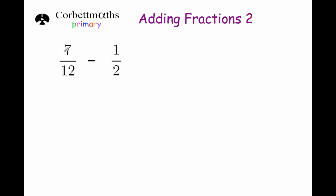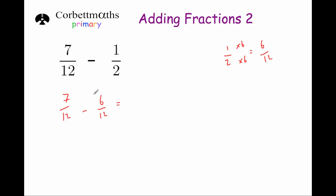Our next example is a subtraction: seven over twelve subtract one half. This is quite nice because we can multiply both the top and the bottom of a half by six to get a twelve on the denominator. So a half becomes six over twelve. That gives us seven over twelve subtract six over twelve. Seven subtract six is one, so our answer is one twelfth.